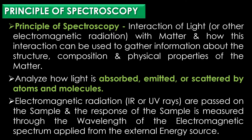The principle of spectroscopy is based on the interaction of light or other electromagnetic radiation with matter, and how this interaction can be used to gather information about the structure, composition, and physical properties of matter. Spectroscopy involves analyzing how light is absorbed, emitted, or scattered by atoms and molecules.